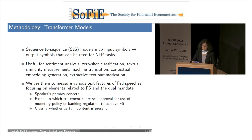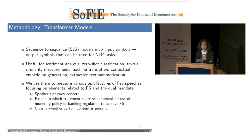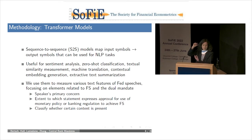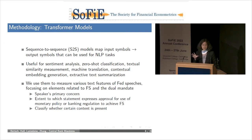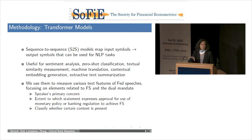Our methods use transformer models, which map one sequence of symbols to another—sequence-to-sequence modeling. These models take a set of input words and map them to output symbols for natural language processing tasks. They're useful for sentiment analysis, zero-shot classification, textual similarity measurement, machine translation, contextual embedding, and extractive text summarization. We can use these sequence-to-sequence models to measure various text features on Fed speeches, focusing on elements related to financial stability and the dual mandate—capturing the speaker's primary concern, the extent of approval for monetary policy or banking regulation to achieve financial stability, and whether certain content is present.